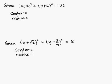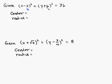So let's say they gave you the equation: given x minus 2 quantity squared plus y plus 6 quantity squared is equal to 36. And they want you to find the center and the radius. This is your h, written in blue, and this is your k.